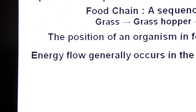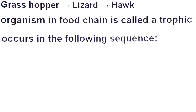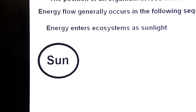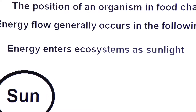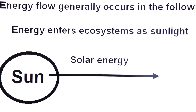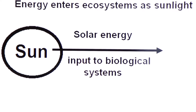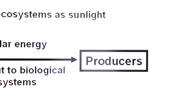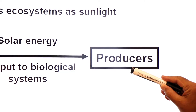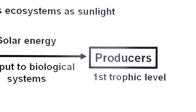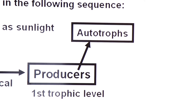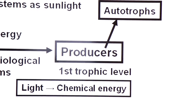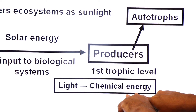Energy flow generally occurs in the following sequence. In any system there is a continuous input of energy from the sun in the form of sunlight. Energy enters the ecosystem as solar energy — there is a continuous input to the biological system from the sun in the form of solar energy. Producers, or autotrophs, convert sunlight energy into chemical energy of glucose. Autotrophs occupy the first trophic level in the food chain; producers are autotrophic members of the ecosystem.